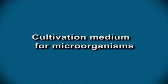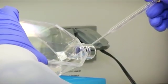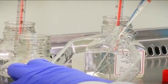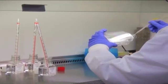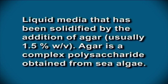Cultivation medium for microorganisms. For cultivation of microorganisms, we need to provide nutrients necessary for the organisms of interest. There are different ways to classify the media. Liquid media: when the required nutrients are provided in liquid form, it is called a broth, usually placed in a test tube or flask. Solid medium: liquid media solidified by the addition of agar, usually 1.5% weight by volume. Agar is a complex polysaccharide obtained from algae. Solid media can be placed in petri dishes as agar plates, or in test tubes as agar slants.